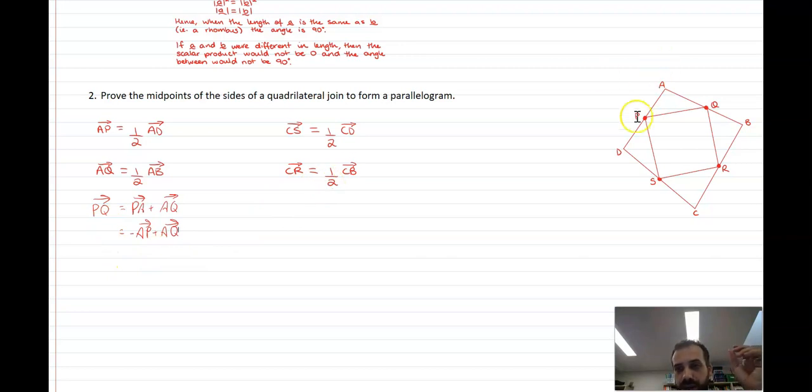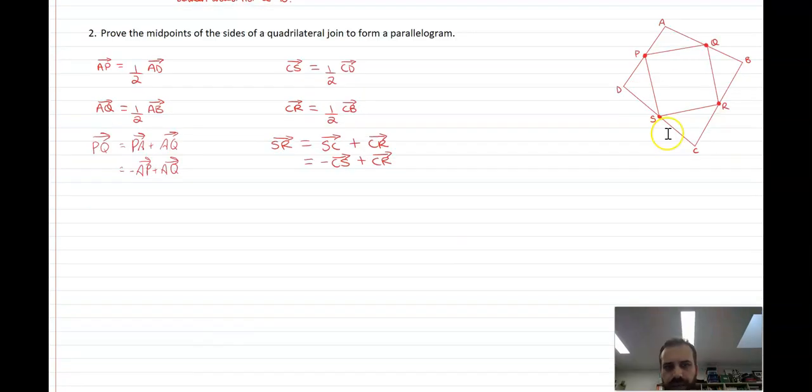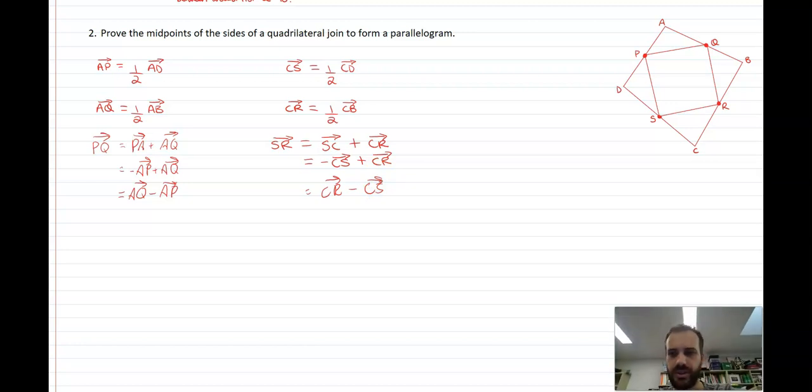Now I can do the same thing, not with vector PQ, but with vector SR. The vector SR is equal to SC plus CR, which is equal to negative CS plus CR. Now I can probably just sort of write these in reverse, just because they'll be easier to work with. AQ minus AP, and CR minus CS. So we're just expressing those bits of our supposed parallelogram as these half vectors.